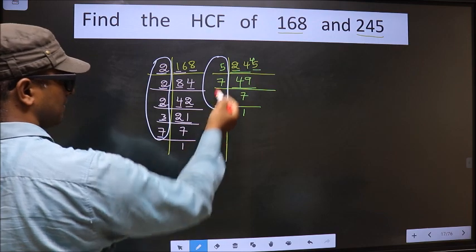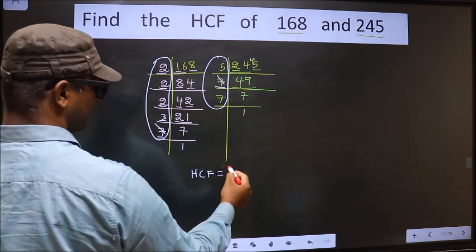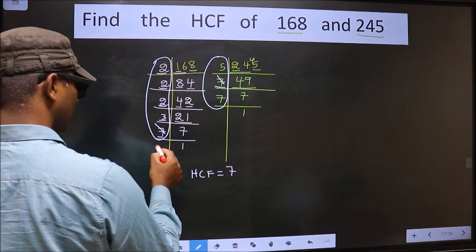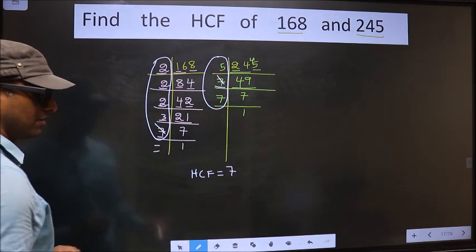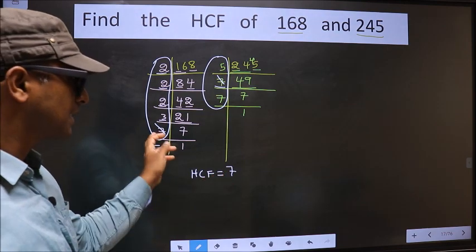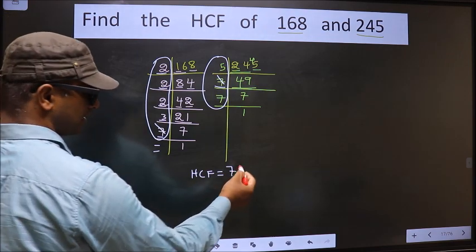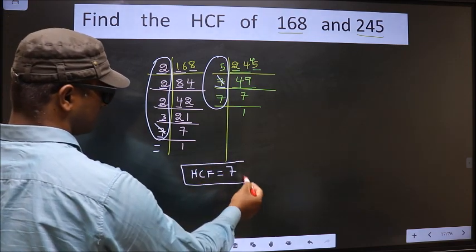Next number 7, do we have 7 here? Yes. So you cut 7 right here. No more numbers are left. So we got only 1 number 7 present in these 2 places. So 7 itself is our HCF.